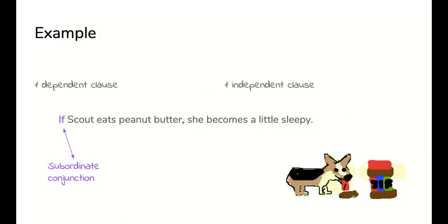First example, if Scout eats peanut butter, she becomes a little sleepy. So if is the subordinate conjunction, and there's a dependent clause and independent clause. The independent one could stand by itself. She becomes a little sleepy. That could be a sentence.